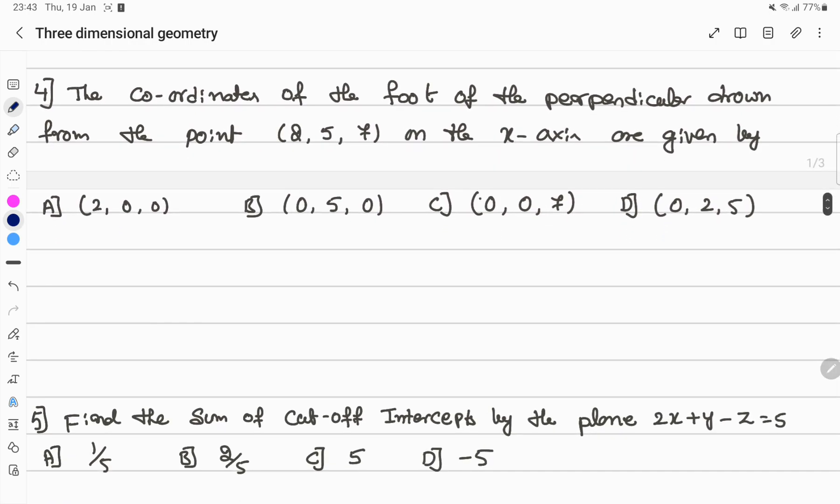Next question. Coordinates of foot perpendicular drawn from the point 2, 5, 7 on the x-axis. In one space, we have x, y, z axis. There is one point 2, 5, 7. We need to find the foot of perpendicular on x-axis. This is the answer, option B.